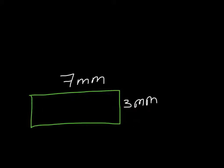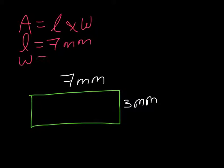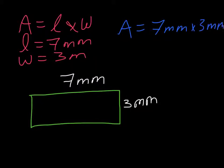So first, one of the important things that you want to remember is to always write your formula. A, or area, equals length times width. I like it if you write down what everything is before you plug it in. So remember my length is equal to 7 millimeters. And my width is equal to 3 millimeters. I can then plug it in. Area equals 7 millimeters times 3 millimeters.